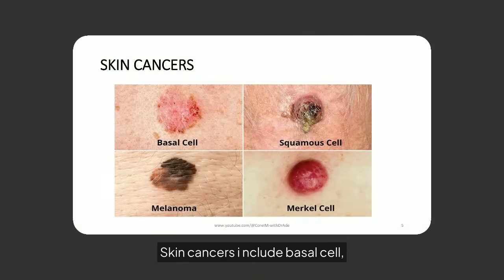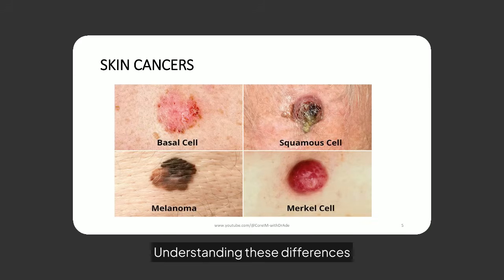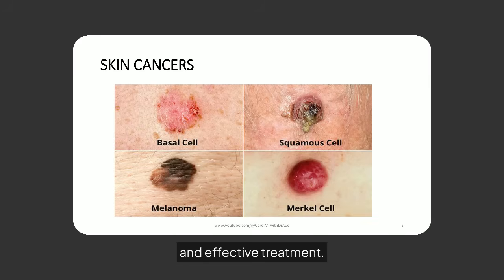Skin cancers include basal cell, squamous cell, melanoma, and Merkel cell carcinoma. Each type has distinct characteristics and risk factors. Understanding these differences is crucial for early detection and effective treatment.